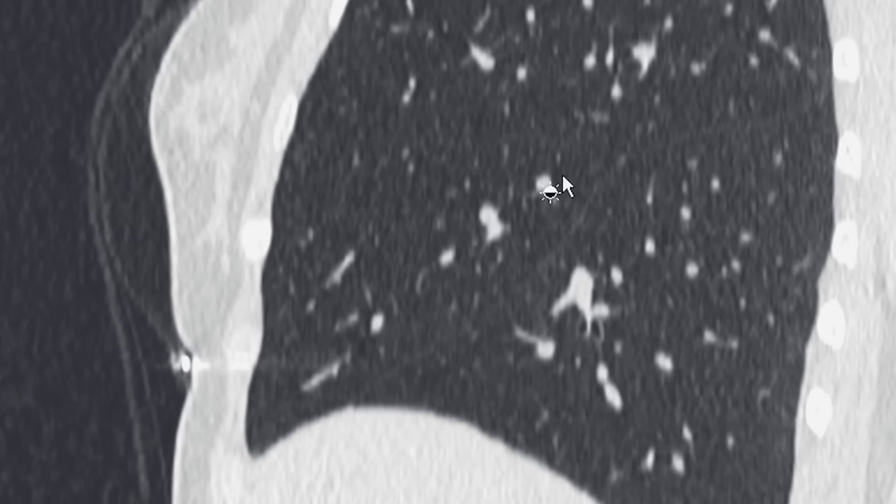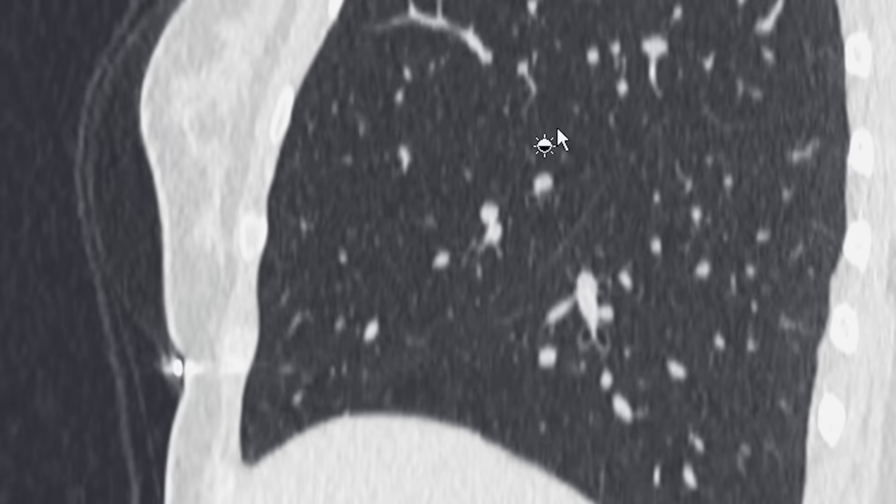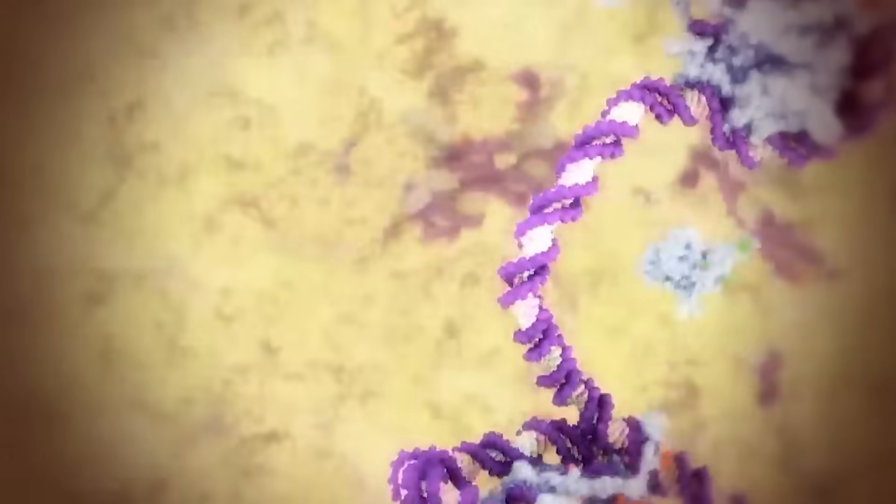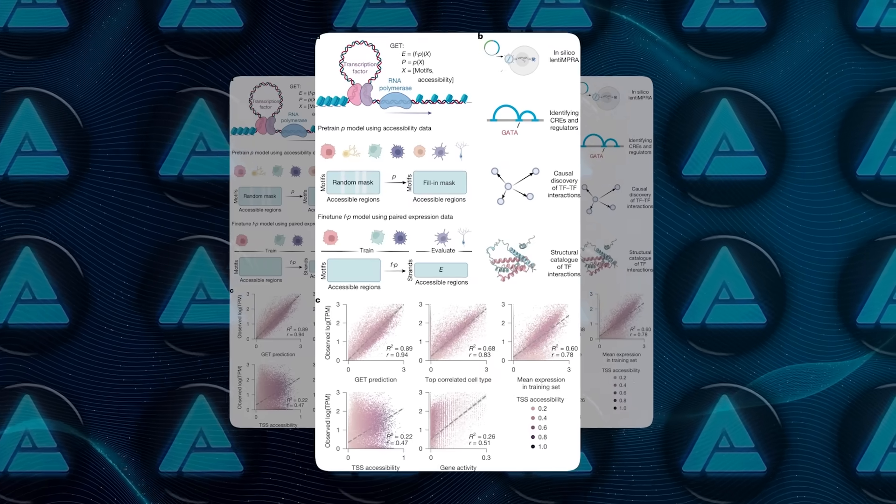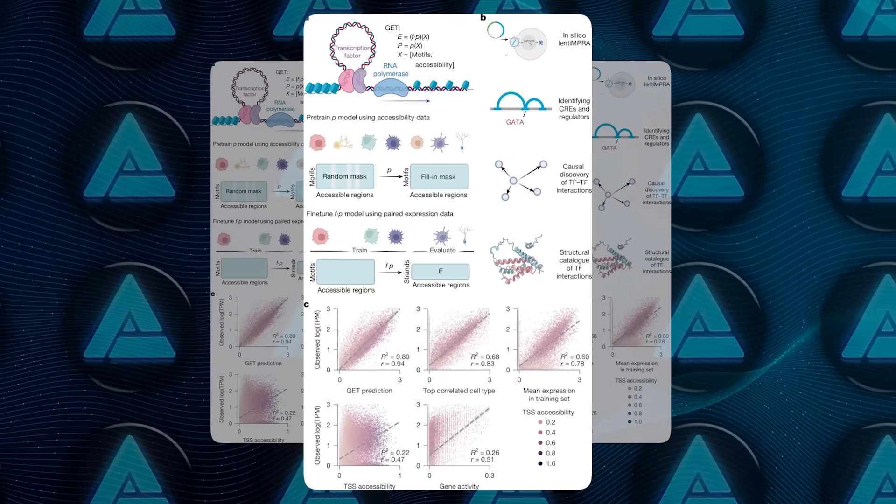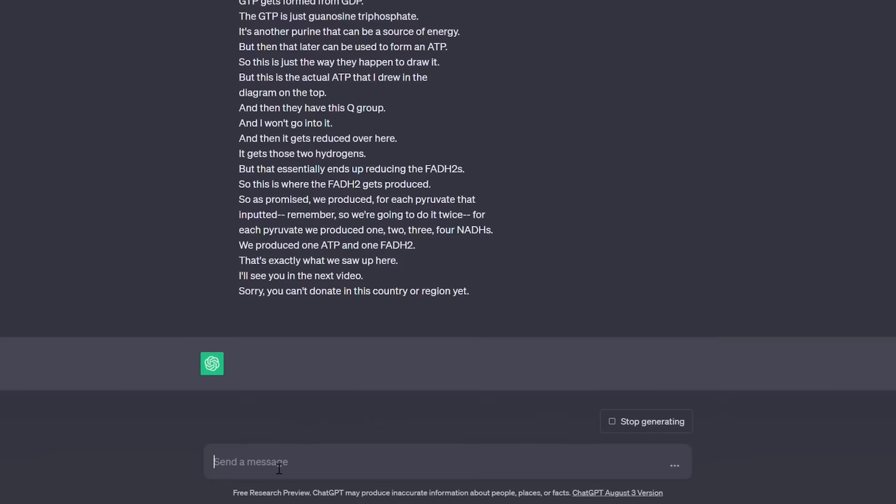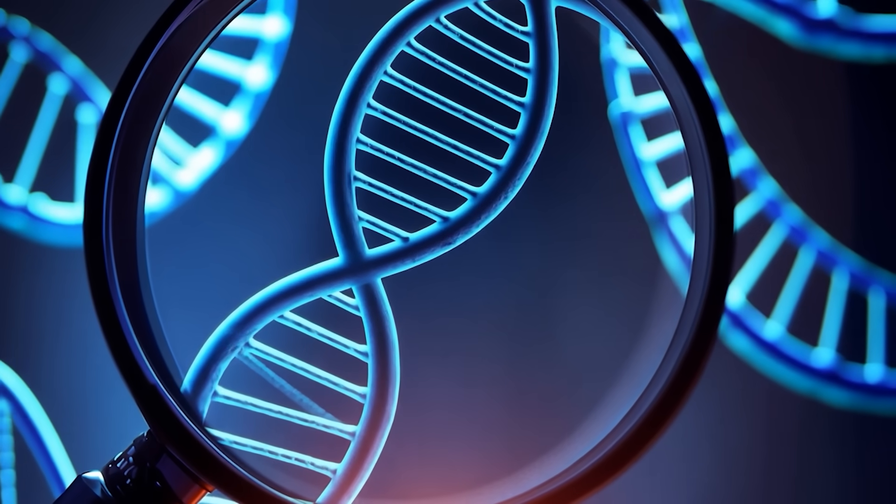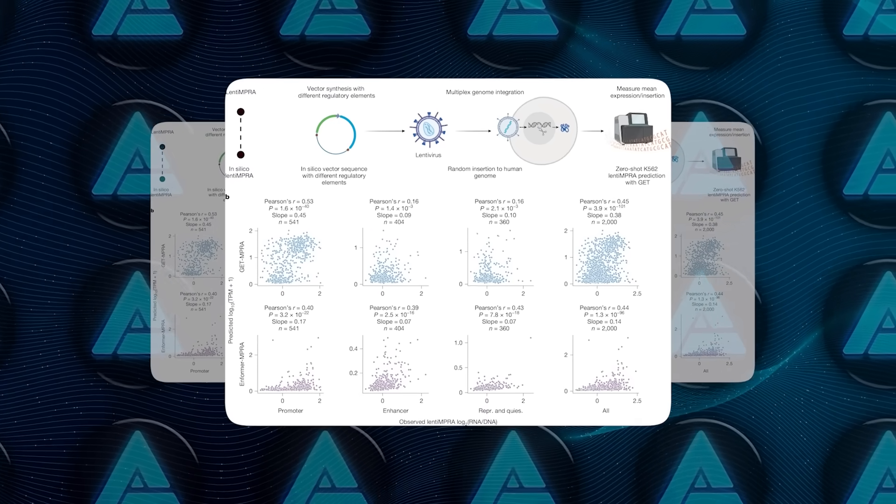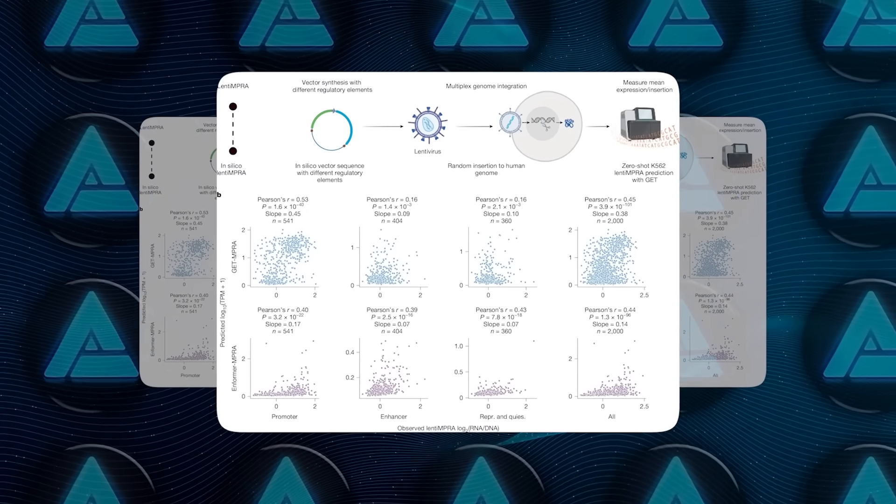A key figure in this research is Raul Rabadan, a professor of systems biology at Columbia. He points out that typical experiments show us how cells react in a specific environment, but they don't necessarily forecast how cells might behave in brand new situations. By using AI, we aim to learn the grammar of gene regulation. It's a bit like ChatGPT, which learns the grammar of human language. Here, the AI learns the grammar of the genome, how different pieces of DNA interact, how accessible they are, and how that influences gene expression.